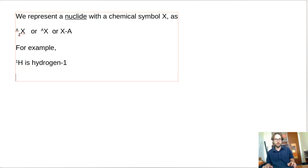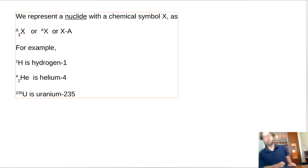And then 4,2 He is helium 4. And one that we'll be talking a lot about here in this class is uranium 235. So this is just how you write these nuclides. Not really a big deal, you guys I'm sure are on top of this.